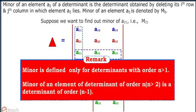Remark: Minor is defined only for determinants with order n greater than 1. Minor of an element of determinant of order n such that n greater than 2 is a determinant of order n minus 1.